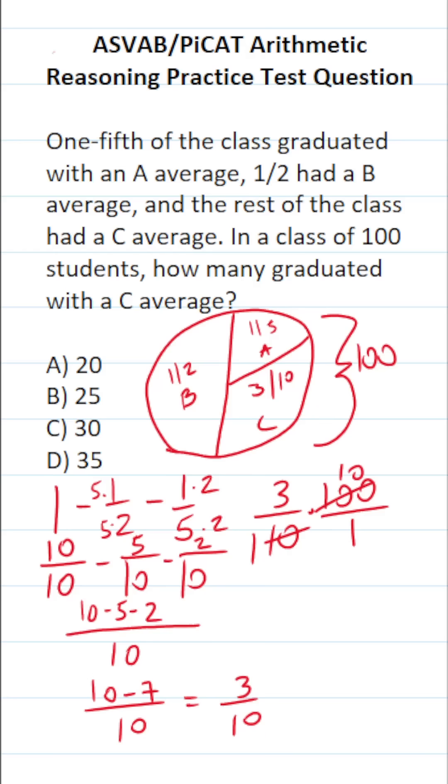This is 3 over 1, which is just 3. 10 over 1 is 10. 3 times 10 is 30. So in other words, 30 people graduated with a C average.